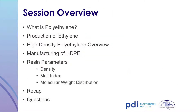In today's session we'll discuss the raw material polyethylene used to produce plastic drums and IBCs. Specifically, we'll discuss how polyethylene resin is produced, with an overview on high-density polyethylene. Resin properties such as density, melt index, and molecular weight distribution will be explored.